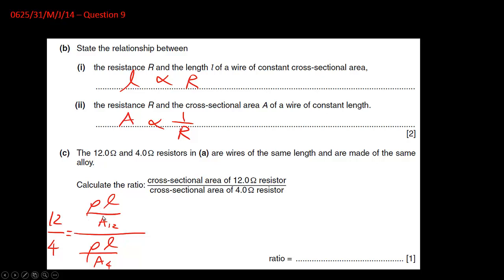So I will use a subscript to represent which area it is, because this one with 12 ohm, this one will have different area, of course, with the 4 ohm, that one, while the rest will be the same. So I don't really bother to use any other subscript, since they're all the same.